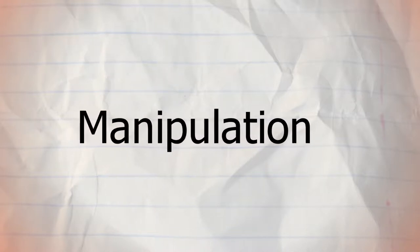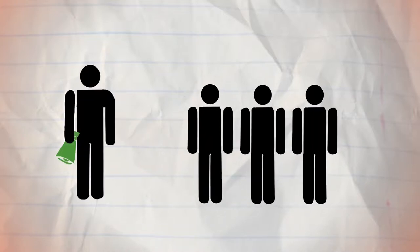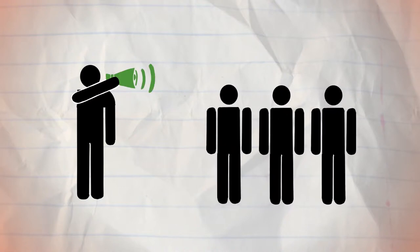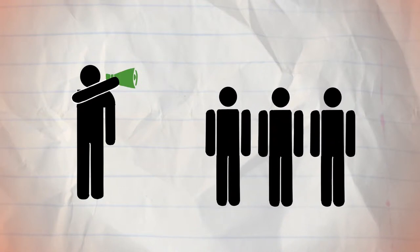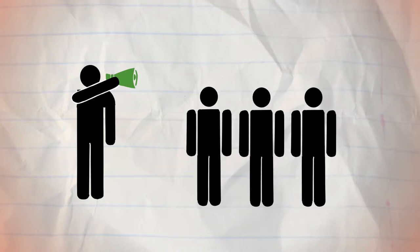Manipulation in media. To understand what manipulation in media is, we should explain what manipulation is by itself. Let's use a simple definition. Manipulation is a type of social influence that aims to change the behavior or perception of others and use them to serve purposes of the manipulator.